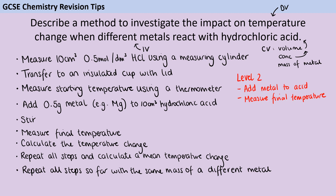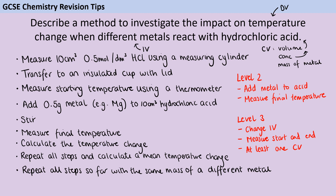To get a level two mark of three or four, you need to have said something about adding the metal to the acid and something about measuring the final temperature — without those you won't get any useful data. To get a level three answer of five or six marks, you need to have mentioned changing the metal, measuring both starting and ending temperature, and at least one control variable. Ideally you'll mention all three control variables, but without any control variable at all you definitely won't get five marks.